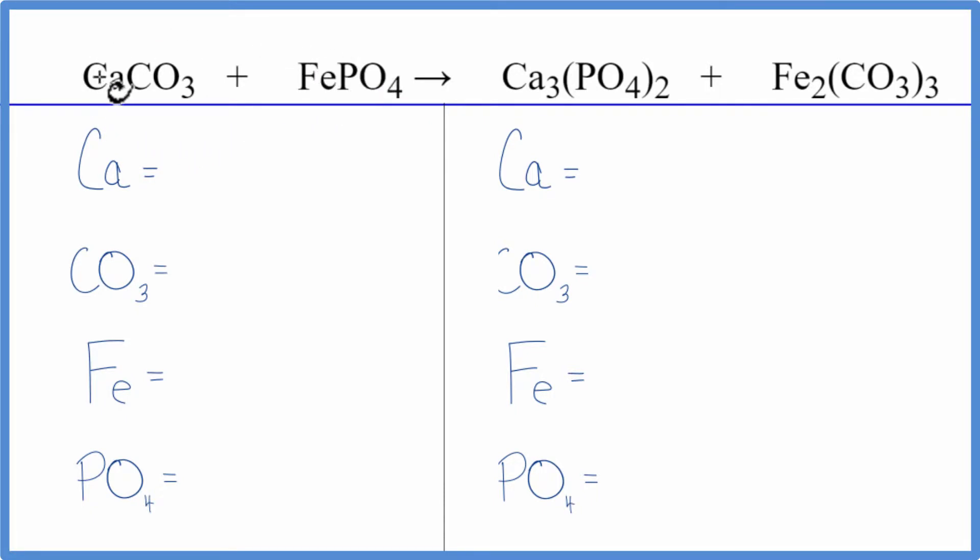The calcium and the iron, they're going to switch places. So when we have a double displacement reaction, we have a little bit of a trick that's going to make it a lot easier. So let's balance the equation.